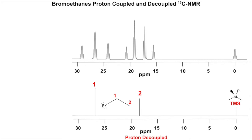Let's look at the proton-coupled spectrum above, where we allow the hydrogens attached to the carbons to couple the carbons. When we do this it gets a lot more complicated. I made these peaks up so they're kind of perfect — in reality it probably wouldn't look this nice. Signal one, when decoupled, gives one peak.